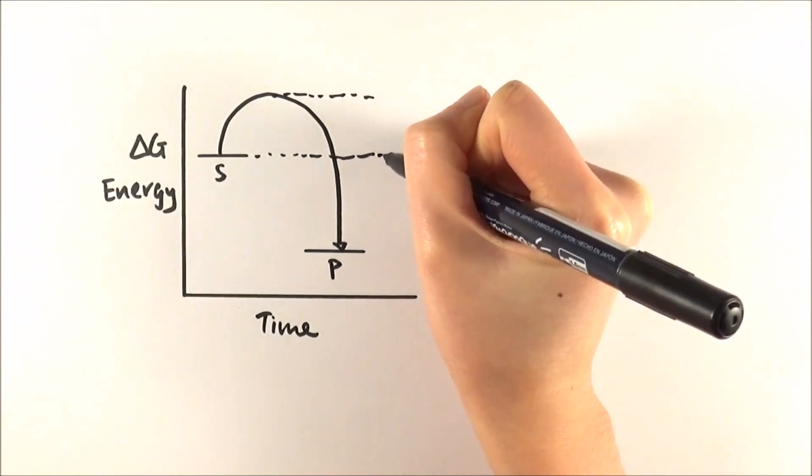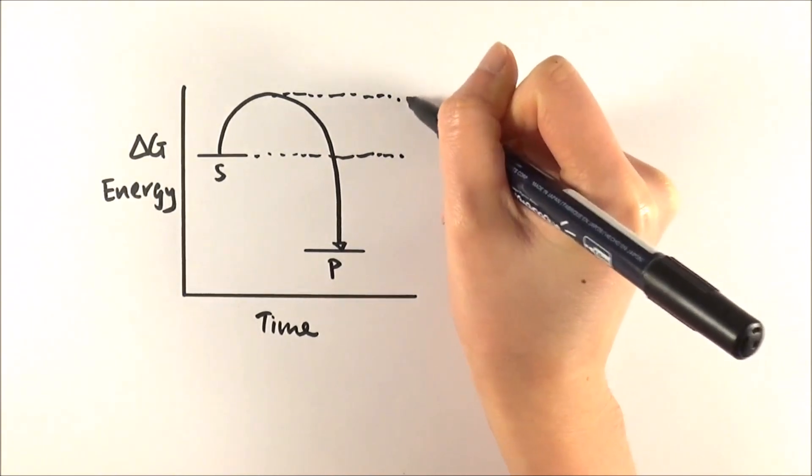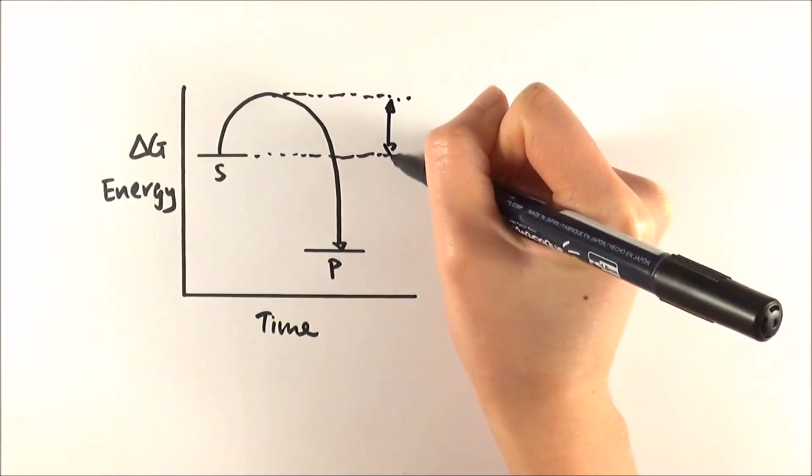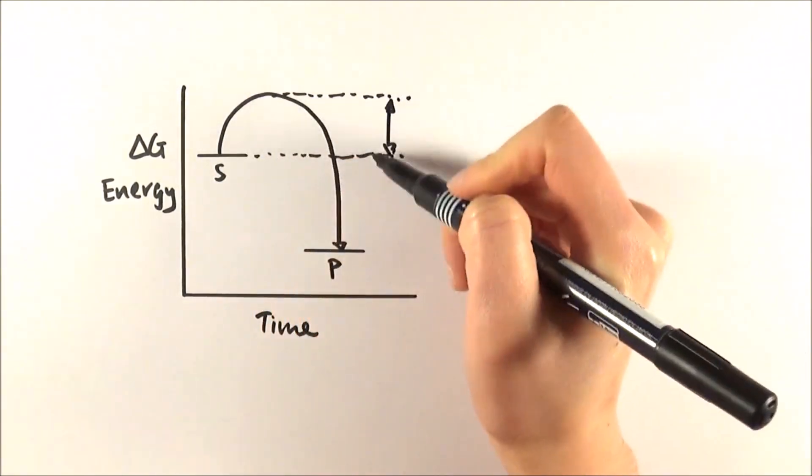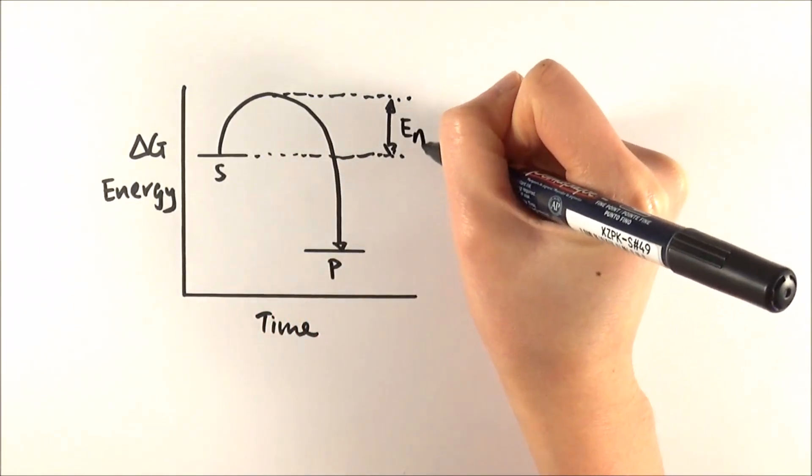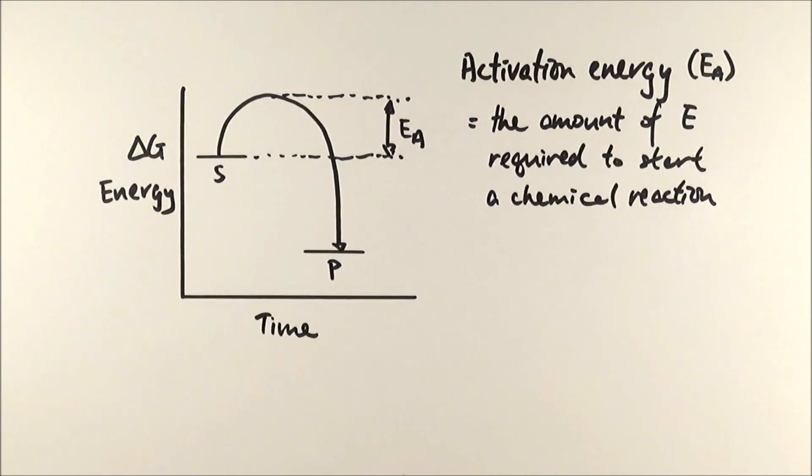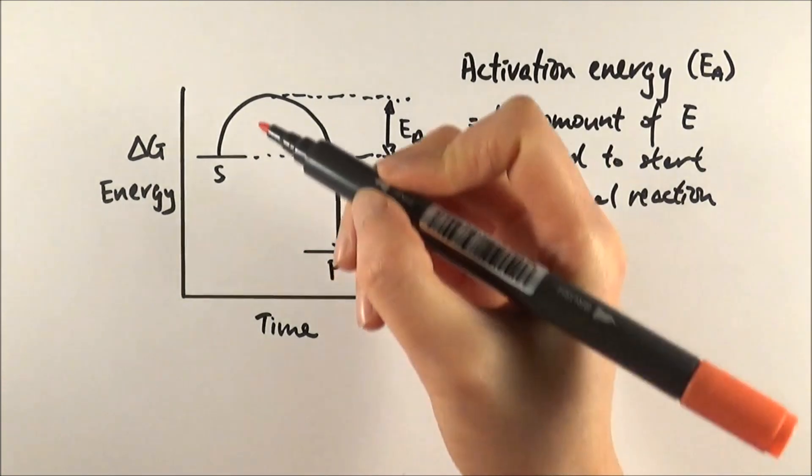As you can see here, the amount of energy that they need to overcome, this part, that's what we call the activation energy. Because it's unrealistic to wait for starch to be just naturally broken down into glucose molecules, we have something called enzymes in our system to help speed things up. What they do is to lower the activation energy in order for the chemical reaction to occur.